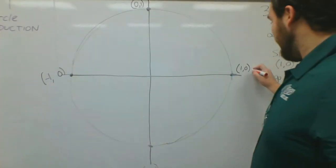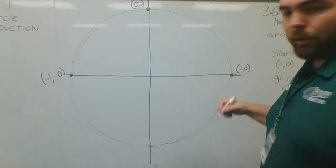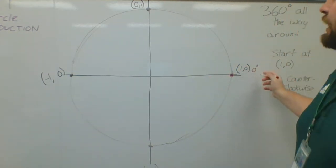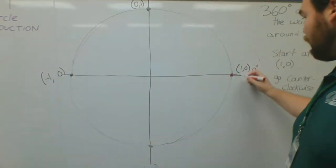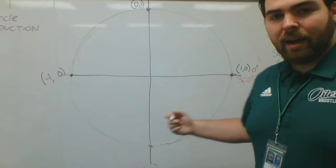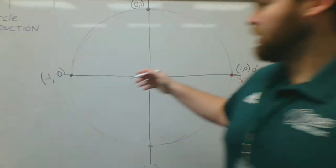So if I start here, which you always will on a unit circle, this is at 0 degrees. If I go all the way around, one rotation is 360 degrees. I can start breaking this down, right?